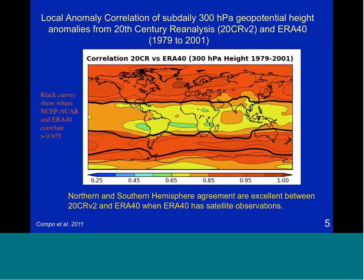ERA-40 used a fixed uncertainty in assimilating those radiosonde data, and that uncertainty was appropriate for having satellite data starting in 1979. So probably the ERA-40 field gives too much weight to the first guess and not enough to the actual assimilation field before about 1979. That idea is furthered if we compare with ERA-40 after 1979: both the northern hemisphere and southern hemisphere correlations with the 20th century reanalysis are very comparable, and where ERA-40 and NCEP-NCAR reanalysis correlate very highly, we see really good agreement.